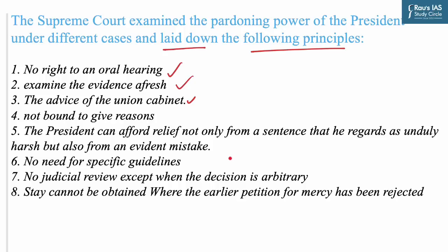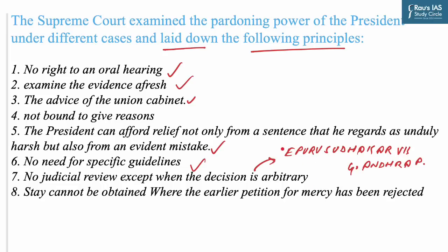The Supreme Court held there is no need to lay down specific guidelines for the President's exercise of power. It also held that the exercise of power by the President is not subject to judicial review except where the presidential decision is arbitrary, irrational, mala fide, or discriminatory. Grounds for judicial review were further provided in Ipuru Sudhakar vs Government of Andhra Pradesh. The Supreme Court also observed that where an earlier petition for mercy has been rejected by the President, a stay cannot be obtained by filing another petition.